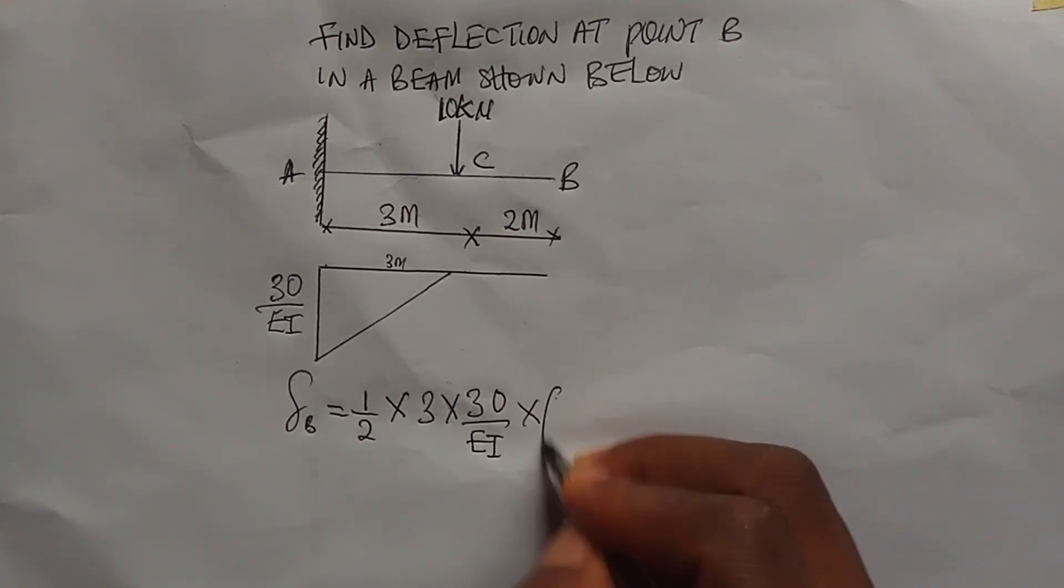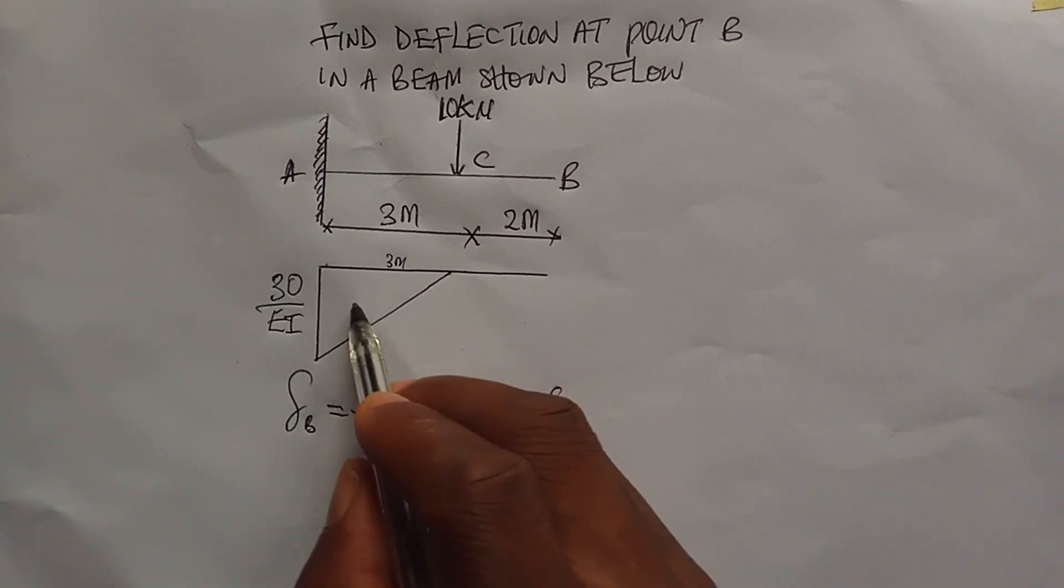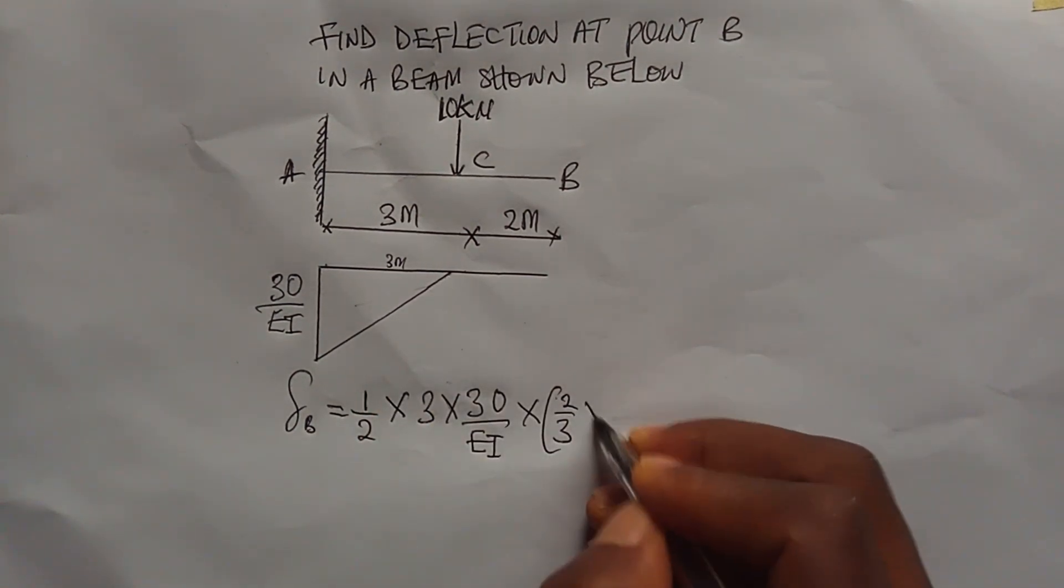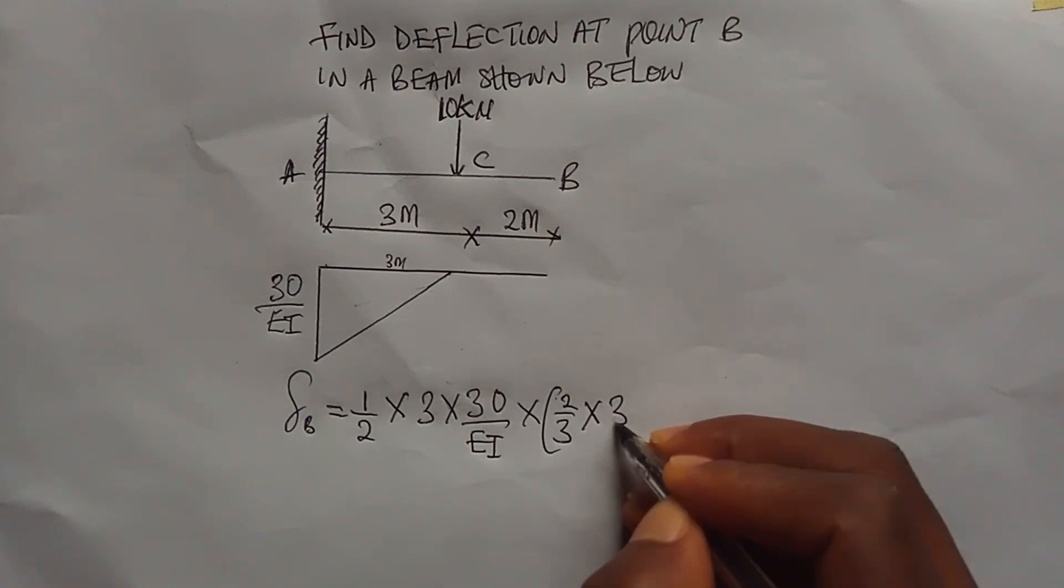The centroid of this shape when you are moving towards this end, which is the sharp end, is 2 over 3 multiplied by the length, which is 3m.